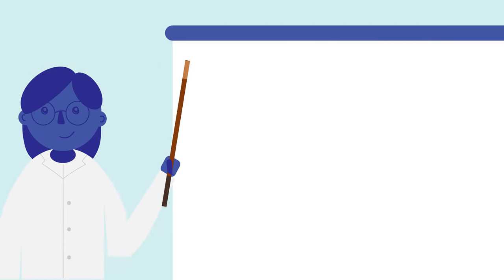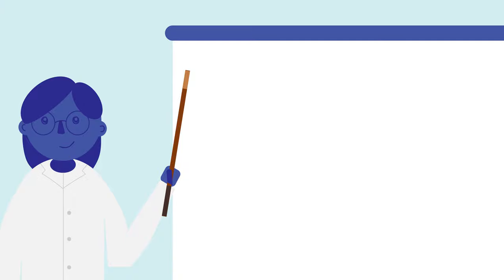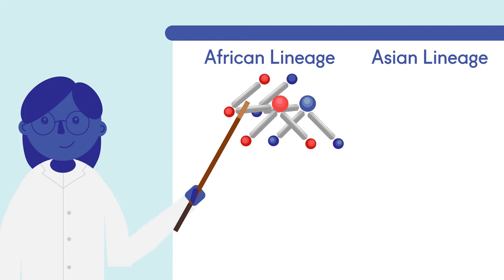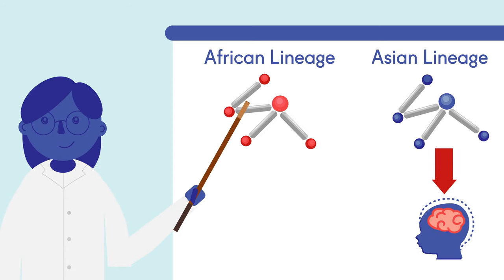Epidemiologists developed a hypothesis that there are two main strains of Zika virus, an African lineage and an Asian lineage. At some point, the Asian lineage split off from the African lineage and acquired the ability to cause microcephaly through a mutation to the virus's genome.